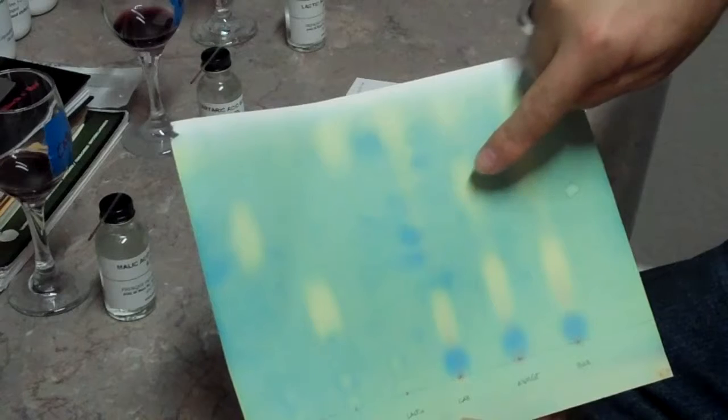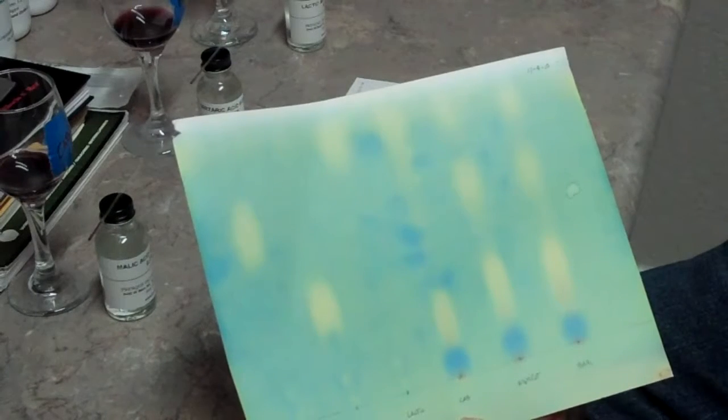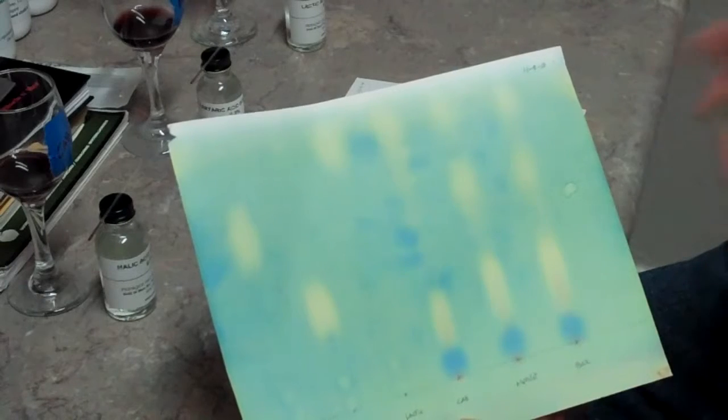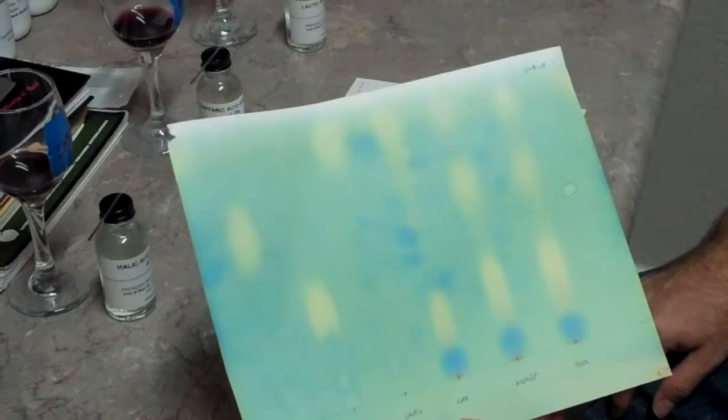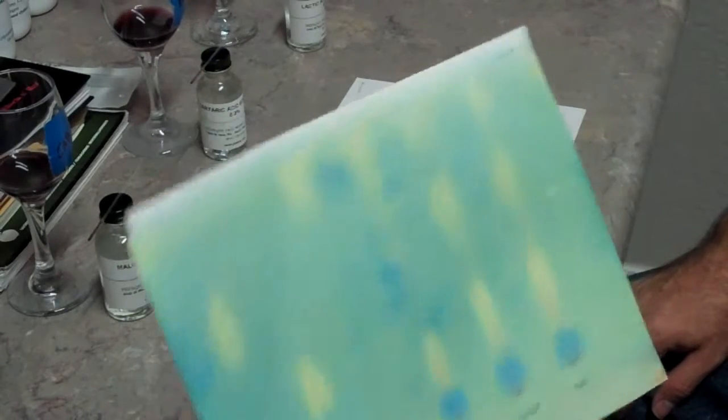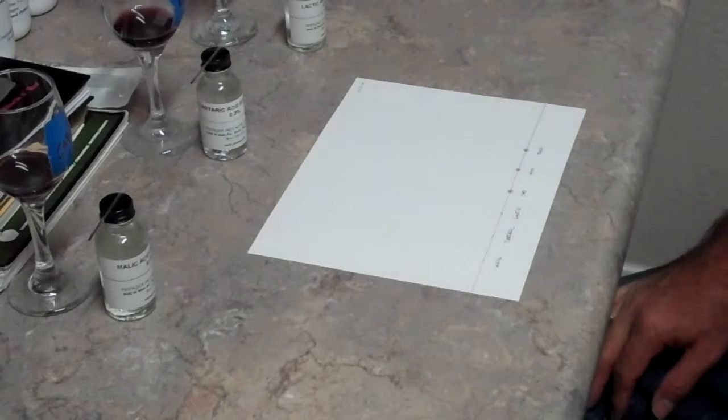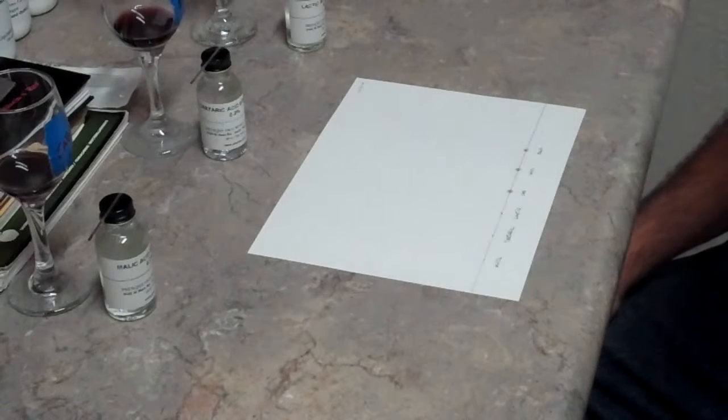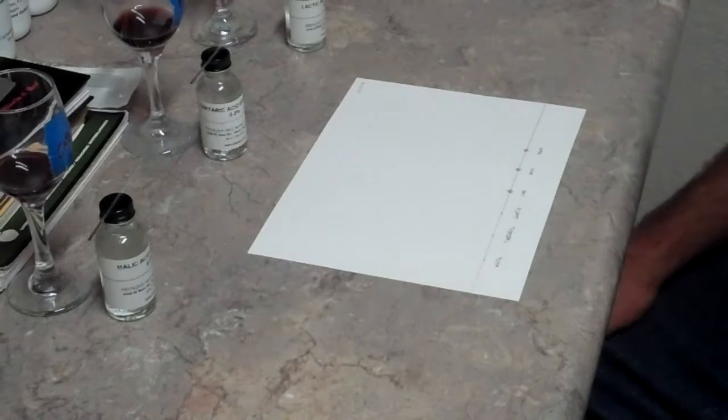I can see that I've got quite a bit of malic acid still in the Merlot and the Barbera, but I do have some lactic acid in it as well, so the conversion is happening. It'll be interesting to see how the test runs this time, which is about three weeks after that initial test was done.